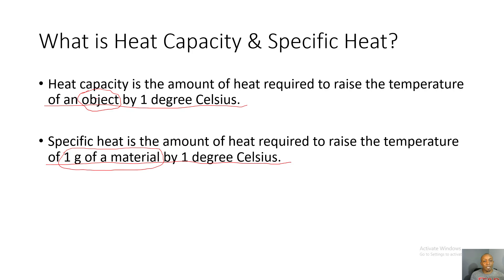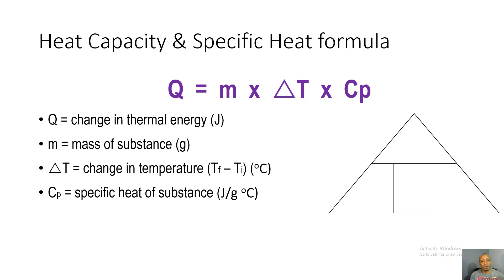So heat capacity looks at raising the temperature of an object by one degree Celsius, while specific heat focuses on raising one gram of that material by one degree Celsius. Here is the formula for heat capacity and specific heat.